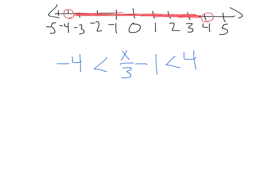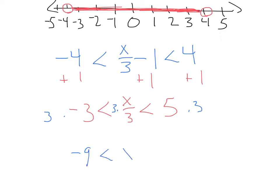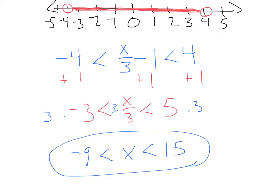From there, we do need to solve. Let's go ahead and add 1 to each side. That's going to give us negative 3 is less than x over 3 is less than 5. Then we're going to multiply by 3 on all sides. That's going to give us negative 9 is less than x is less than 15. This is going to be our final answer.